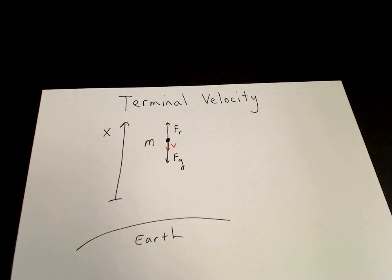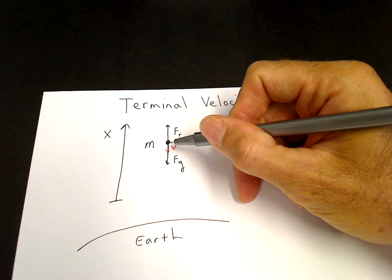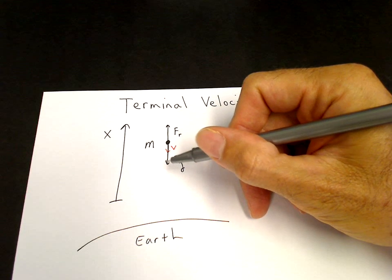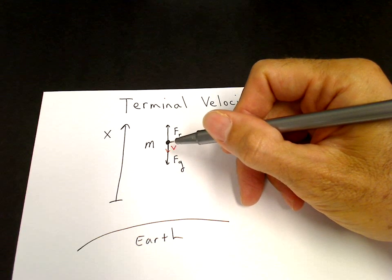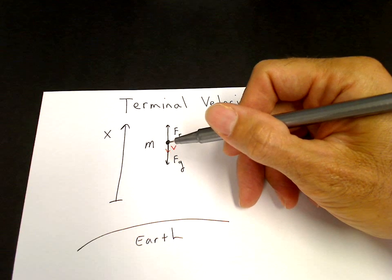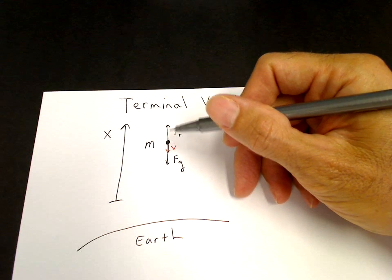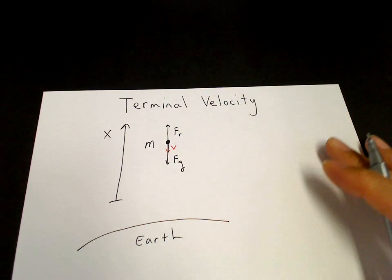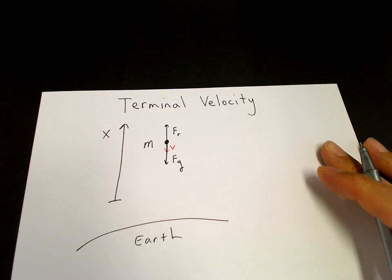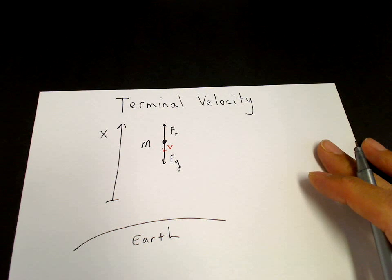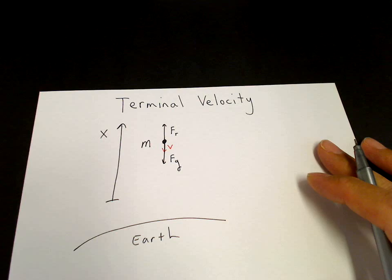Here is the falling mass and gravity force is in down direction. If the mass is falling, the velocity is down, then the air resistance force will be up. We assume that there is no air resistance when the velocity is zero. And then with increasing velocity, there's an increasing air resistance.